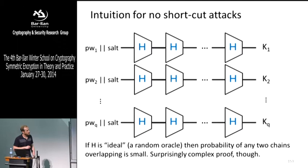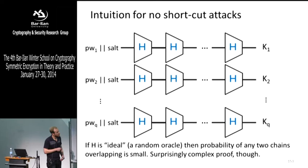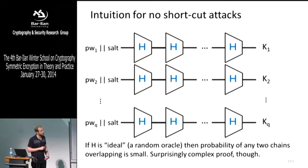Let's get some intuition for why attacks are hard here. If this hash function is pretty good — let's just imagine it's random, so every input is mapped to some random output — what's the best thing an attacker can do? He enumerates all passwords he wants to try, takes the salt from the ciphertext, and has to re-derive all these keys. What would happen if we have the output too small, something like 32 bits? You'd just brute force the key space.